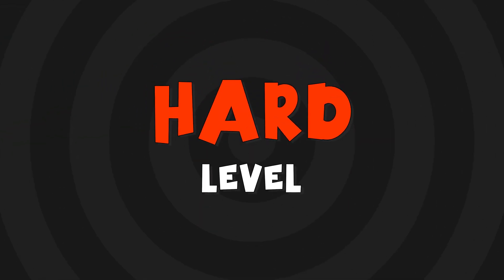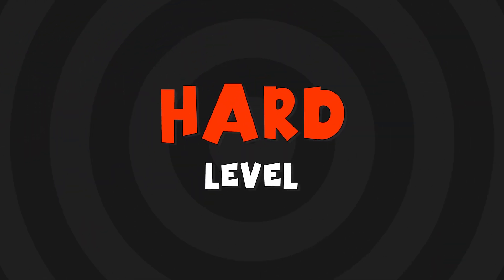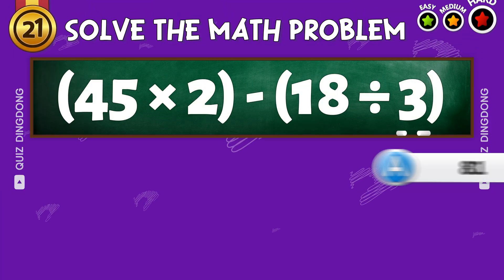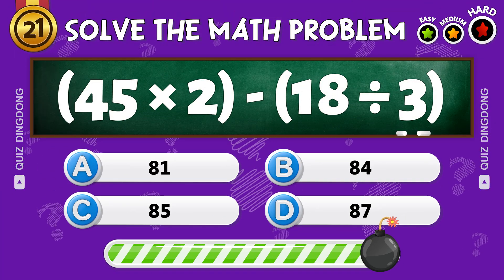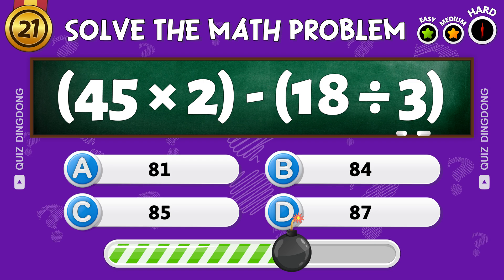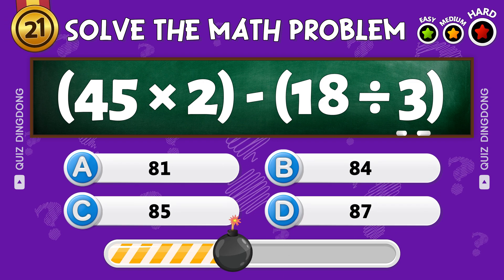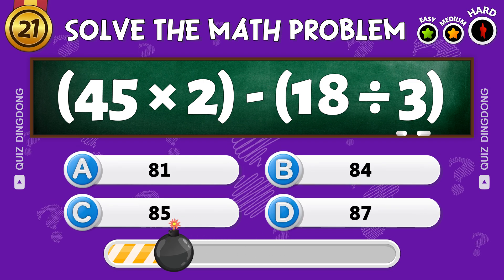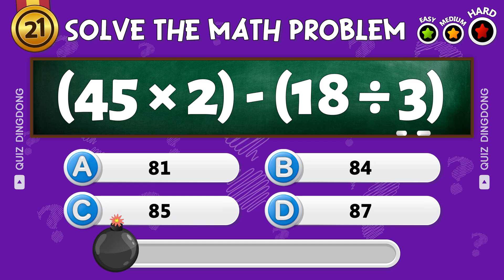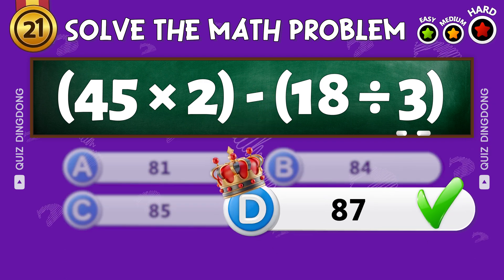Let's get started! What's 45 times 2 minus 18 divided by 3? That's right! The answer is 87!